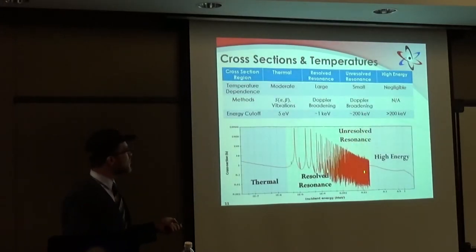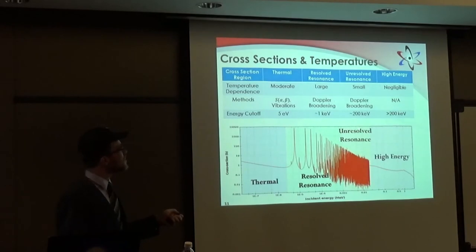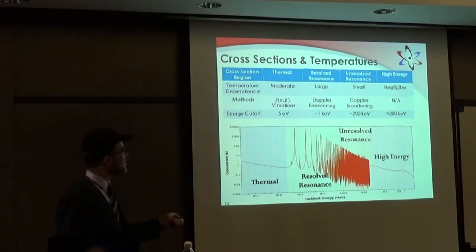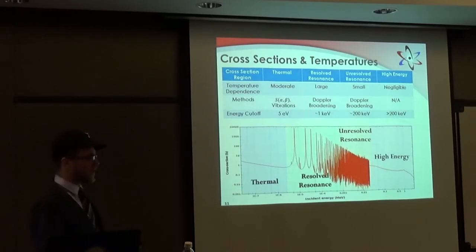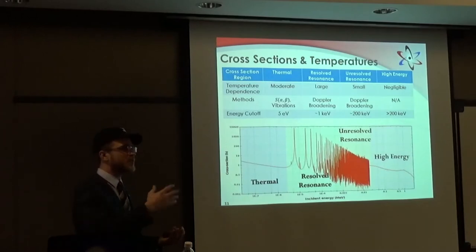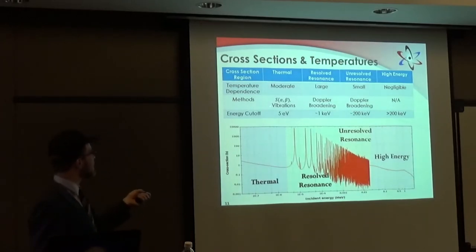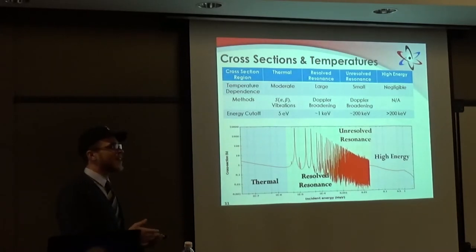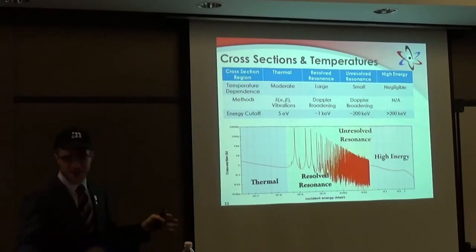Within the high energy region, if your fuel heats up there's not much that happens. There's an unresolved resonance region where you start to get a little bit of feedback. Then in the region where you have very large, well-defined resonances with large peak values, you get a lot of cross-section change. In the thermal region, there's actually quite a bit of S-alpha-beta — a measurement of the energy of a crystal lattice, capturing chemistry-type reactions happening with neutrons that have an energy on the order of those reactions. That's actually a trade study I can get into — how does S-alpha-beta versus not S-alpha-beta versus on-the-fly S-alpha-beta work.